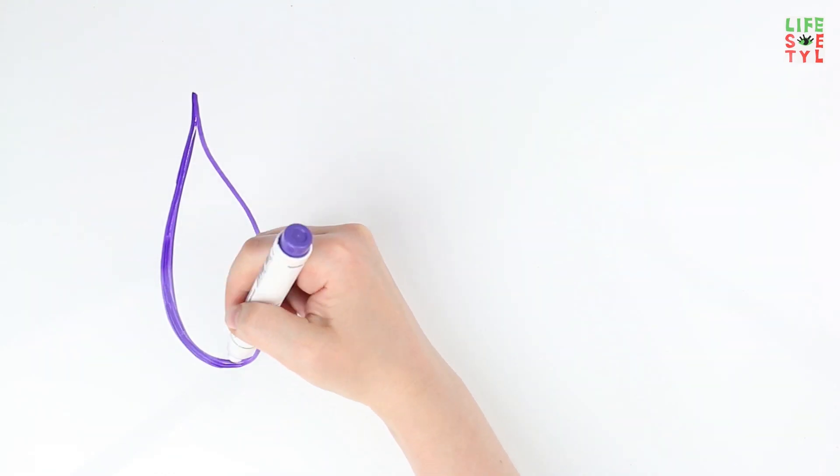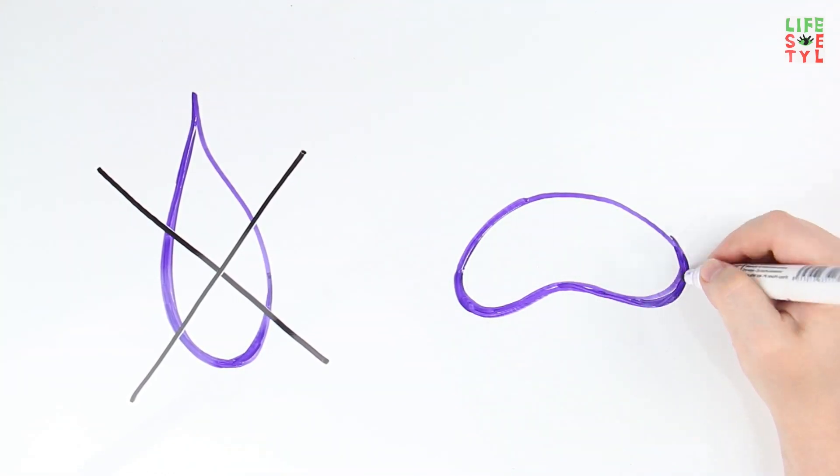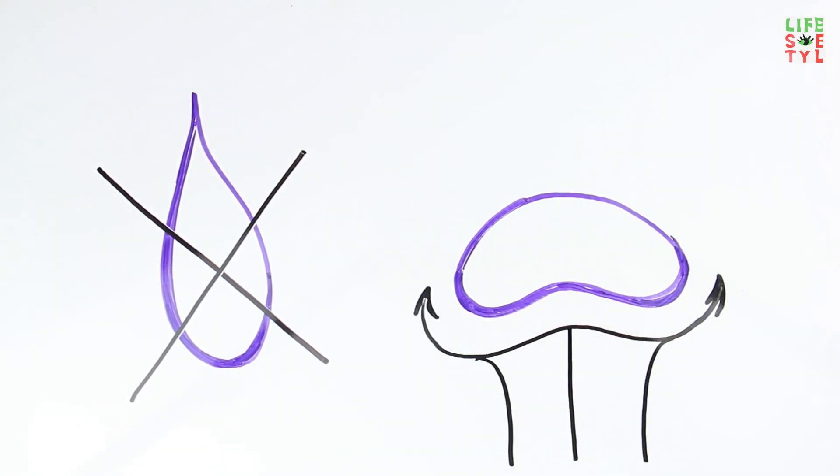By the way, the oblong pointed form raindrops often depicted in figures do not exist. Due to air resistance, raindrops have flattened shape while falling.